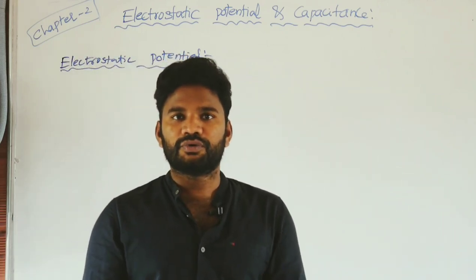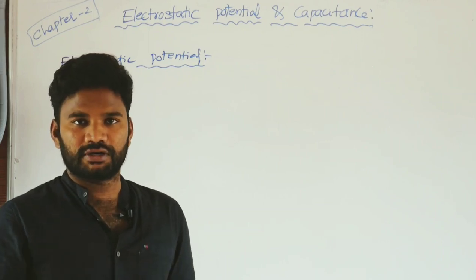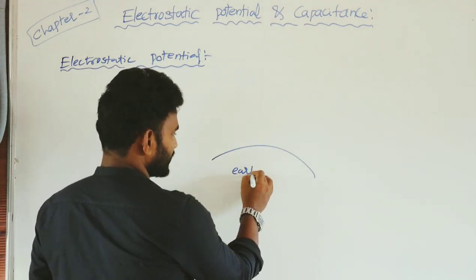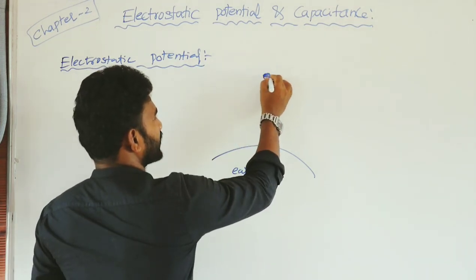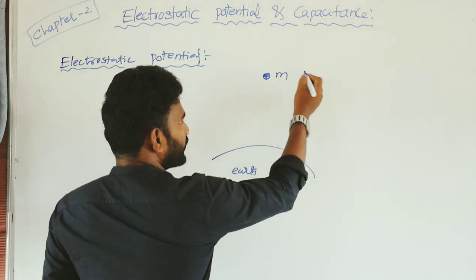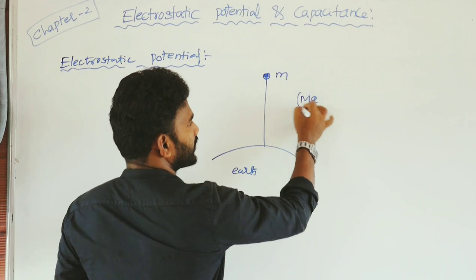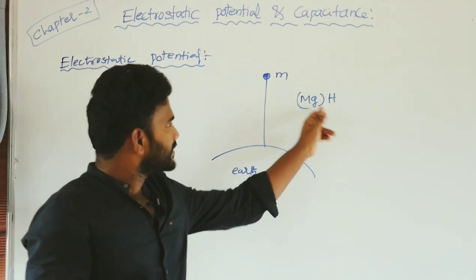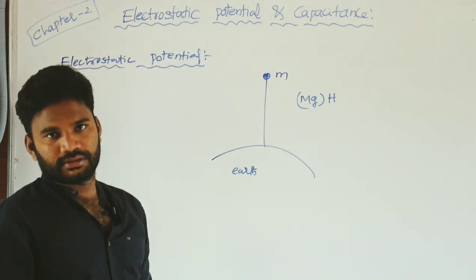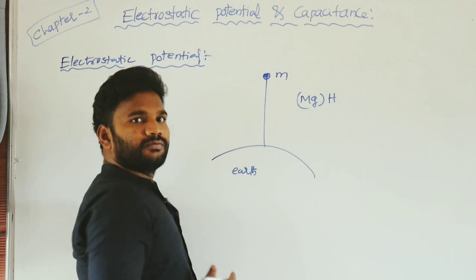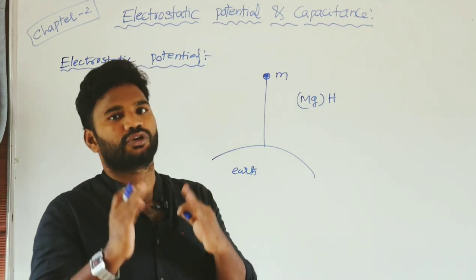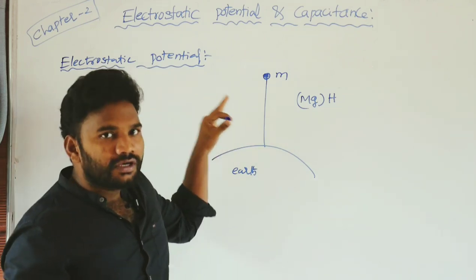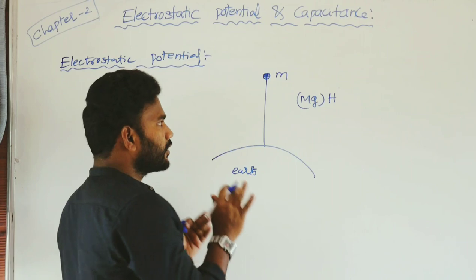Let me go with the example of Gravitational Potential Energy. Consider the ground — that is Earth. Take a particle or any object of mass small m. The Potential Energy it has is mg into h, where mg is the Gravitational Force acting towards the Earth, and h is the distance between the mass and the Earth. For the gravitational field, we will also have Potential, and similarly in the Electrostatic Field we will also have Potential.